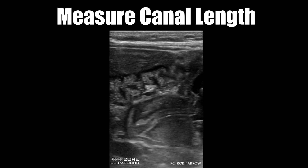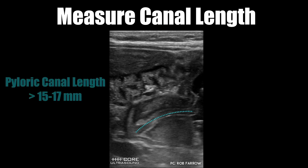The final measurement is the canal length. This will be taken in a long axis view, again shown by the dotted line. An abnormal canal length is anything over 15 to 17 millimeters, and we can remember this range by keeping in mind 16 millimeters and our mnemonic of pi.